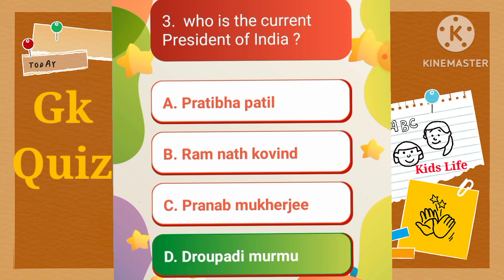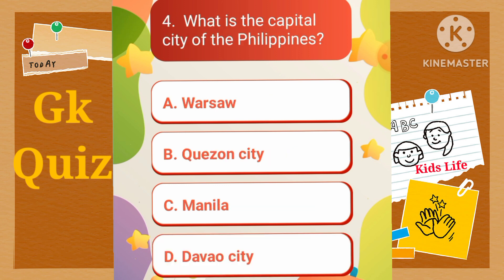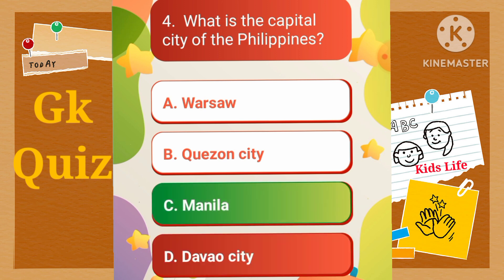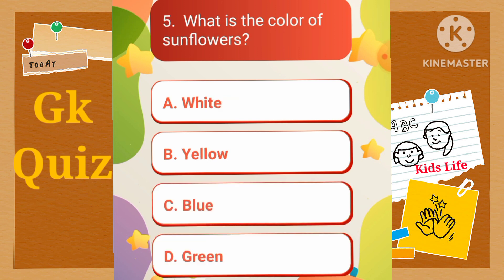What is the capital city of the Philippines? A) Warsaw, B) Quezon City, C) Manila, D) Davao City. What is the color of sunflowers? A) White, B) Yellow, C) Blue, D) Green.